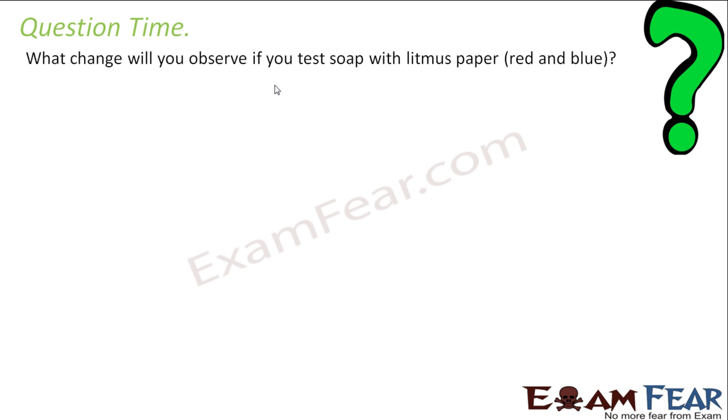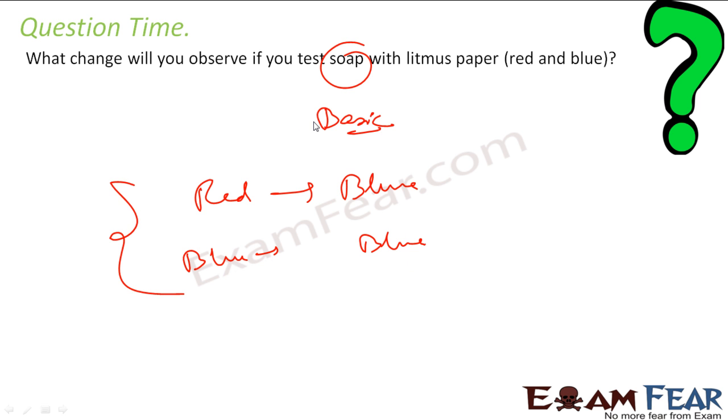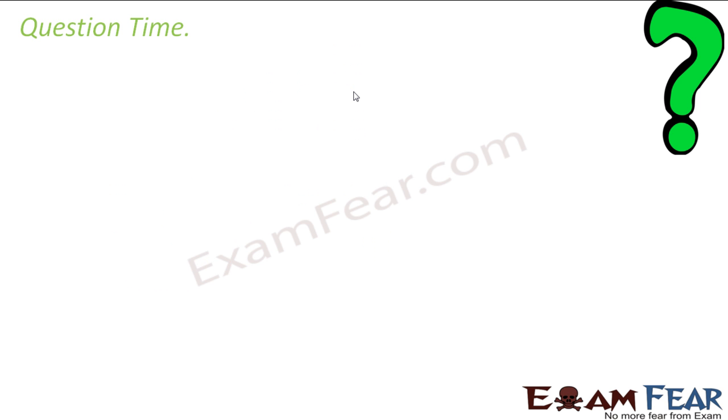What will you observe if you test soap with litmus? Soap, as I told, is basic. And basic red will turn blue. And if you have blue litmus paper, it will still be blue. Since soap is basic, soap will turn red to blue. And if you put blue litmus paper to soap, it will still be blue.